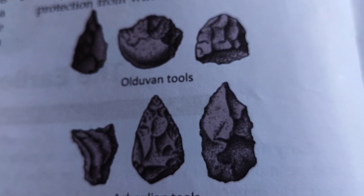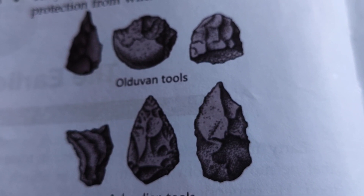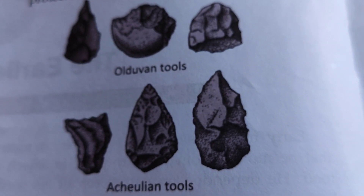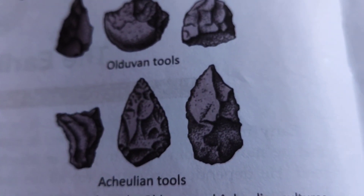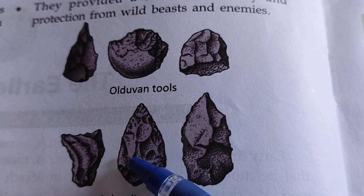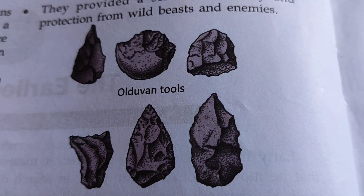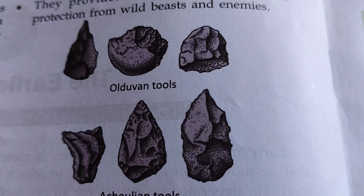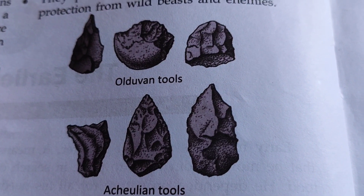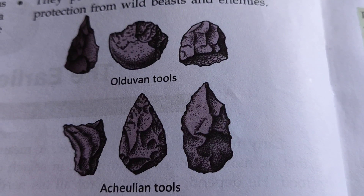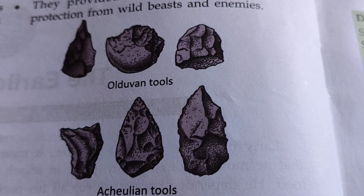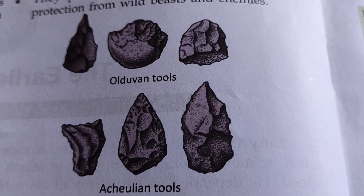Arliman used tools made of stone, wood, and bone — whatever was available in his surroundings. The best material was used for making tools. You can see the sharp edges of these tools. These sharp edges were used to cut and chop roots, animal hides, and to scrape tree bark.